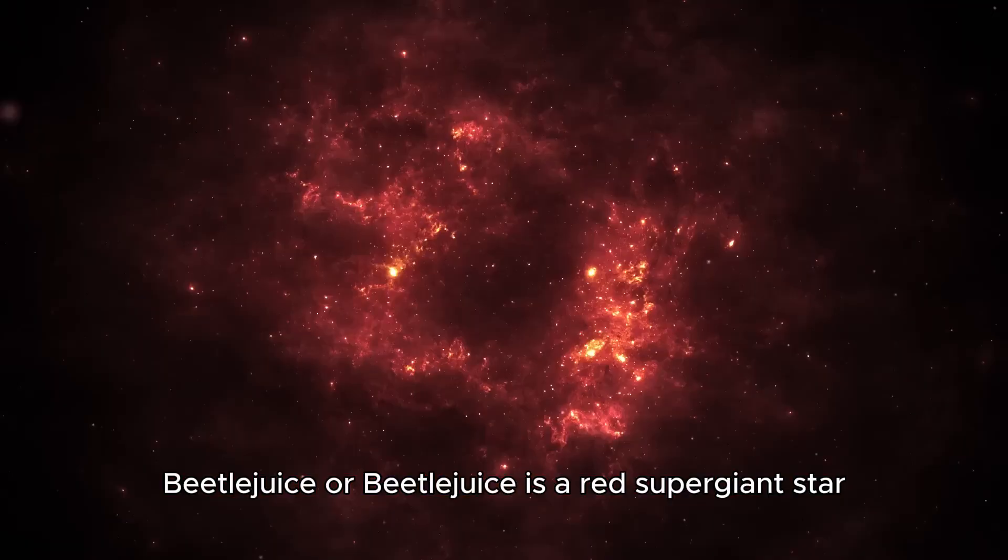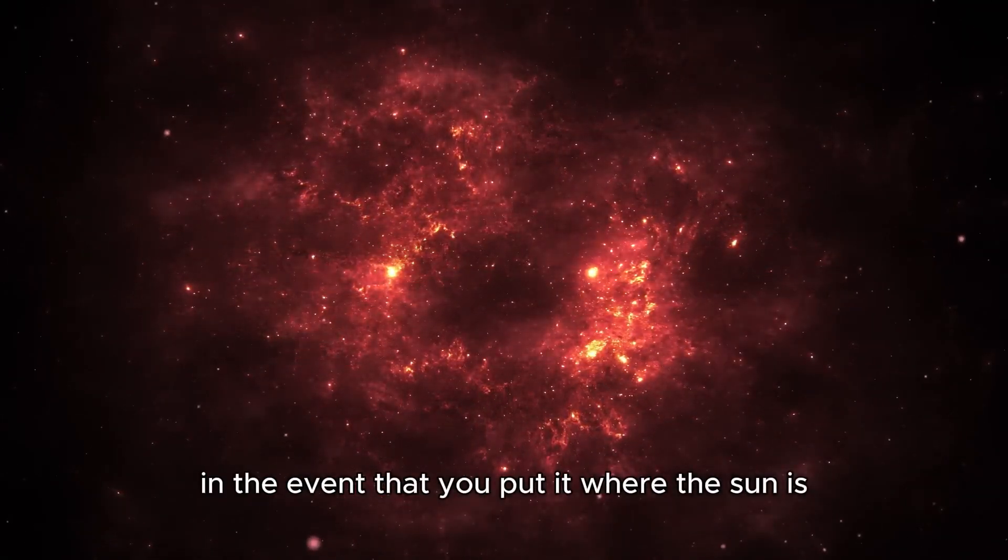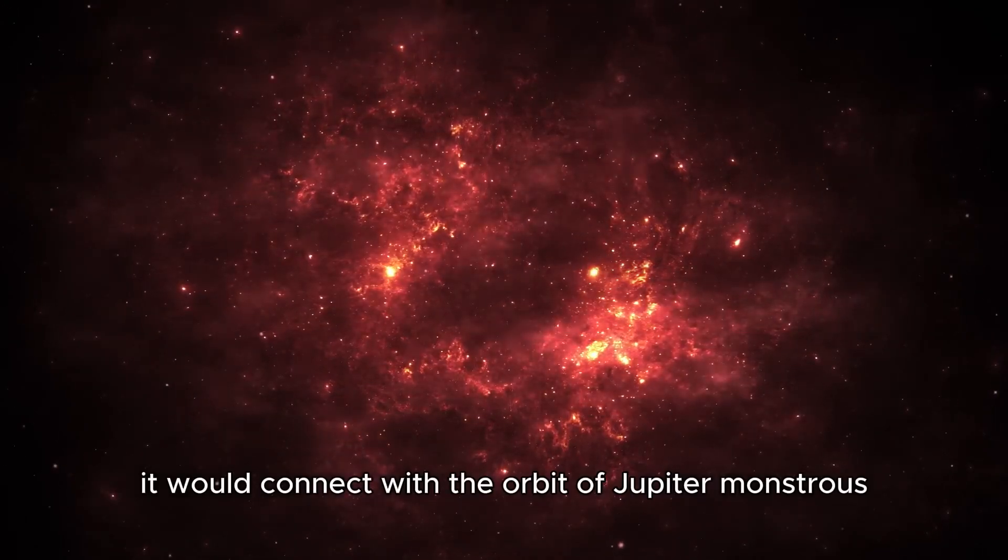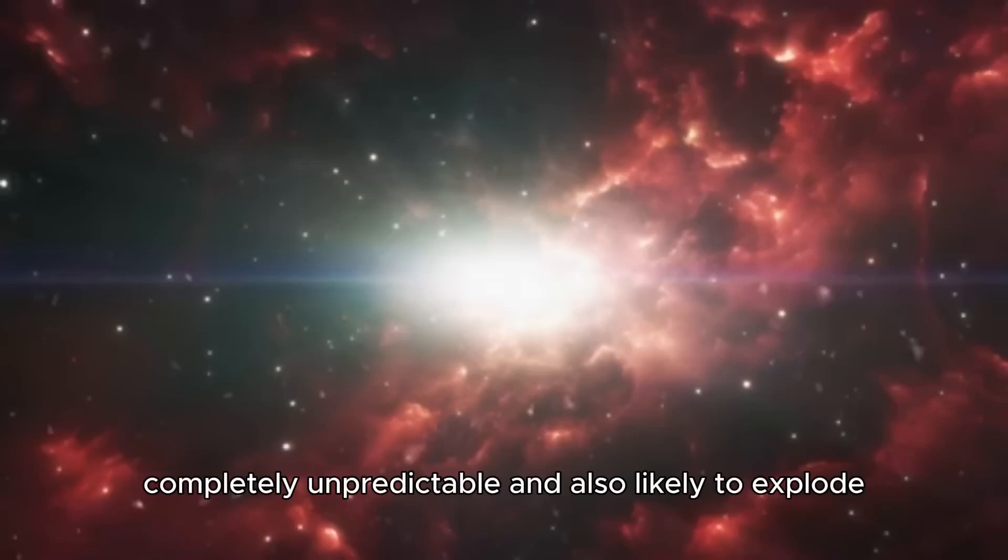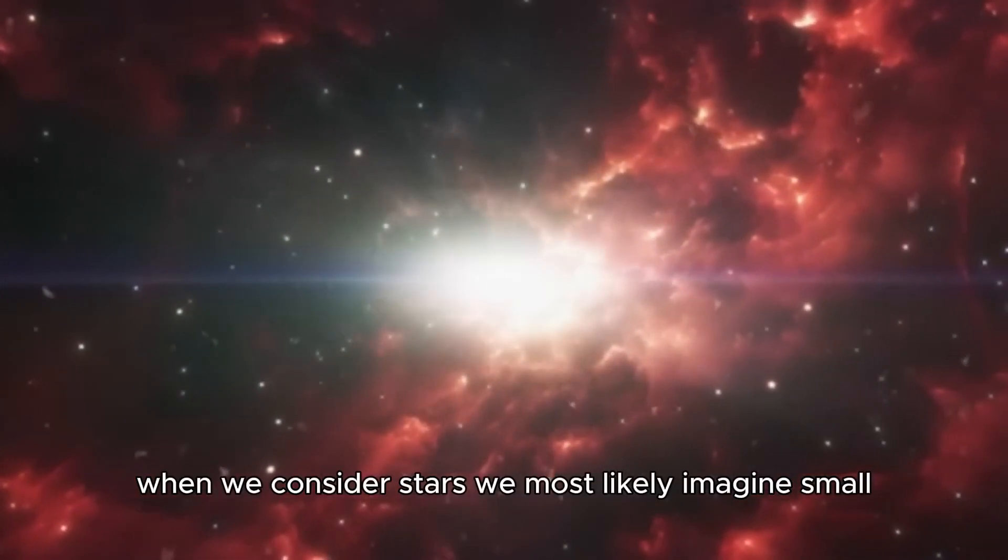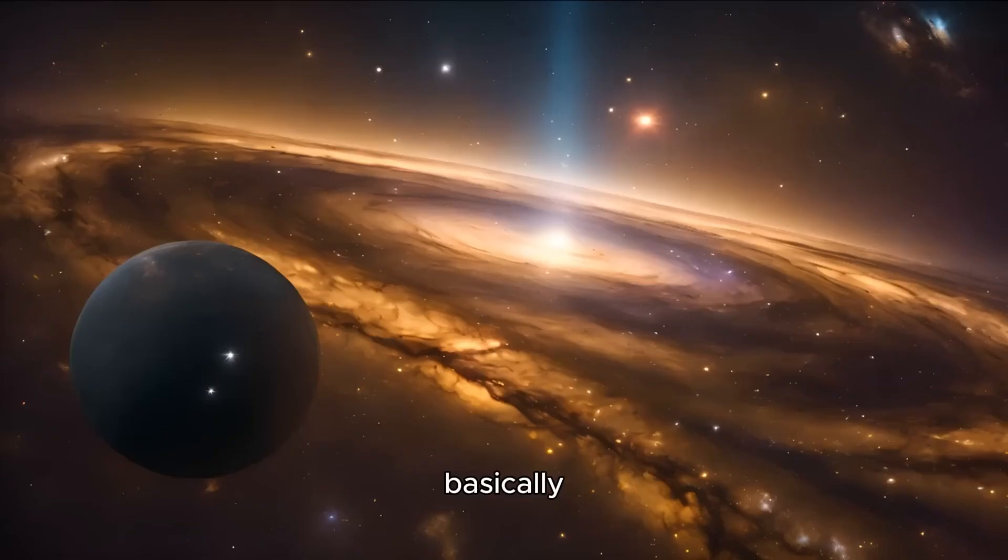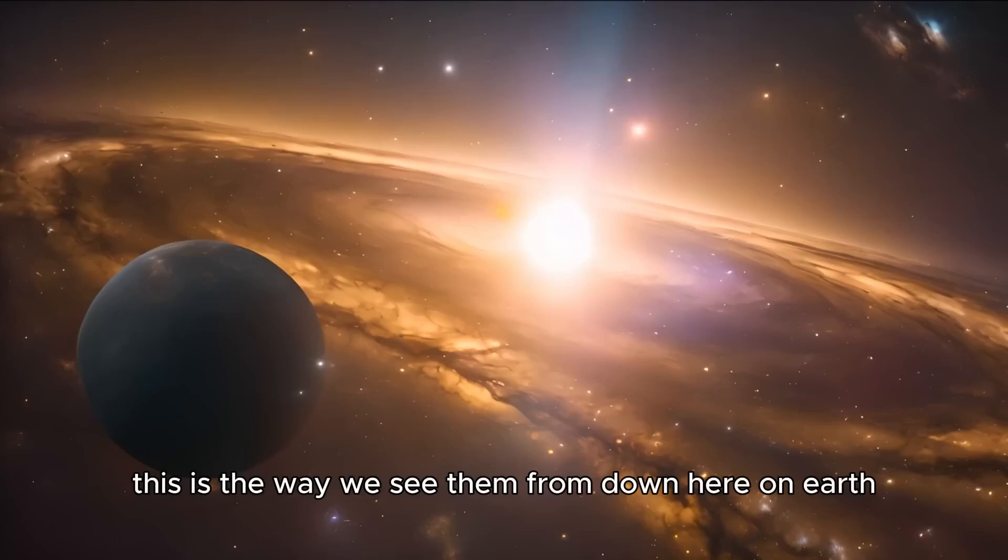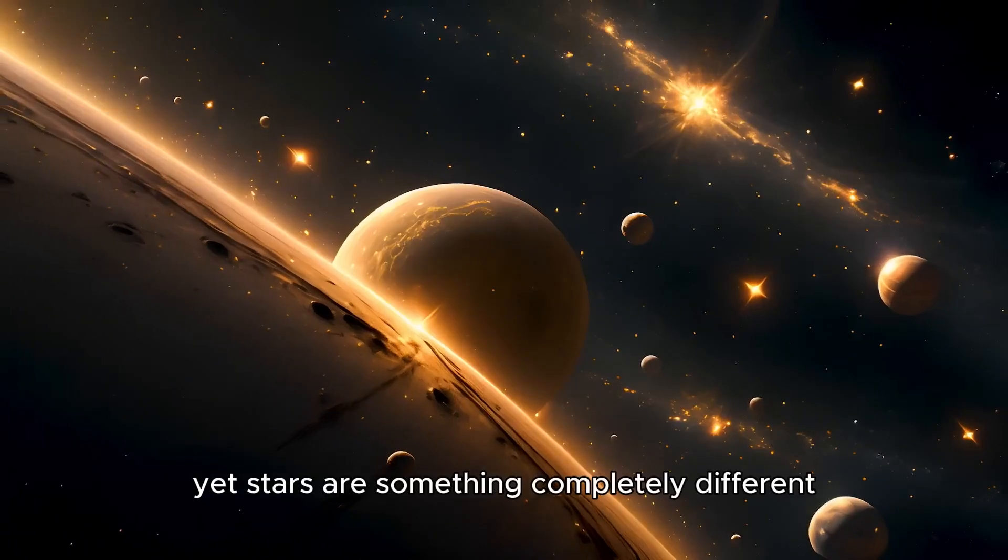Betelgeuse is a red supergiant star. In the event that you put it where the sun is, it would connect with the orbit of Jupiter, monstrous, completely unpredictable and likely to explode. When we consider stars, we most likely imagine small glowing things in the night sky. Basically, this is the way we see them from down here on Earth. Yet, stars are something completely different.